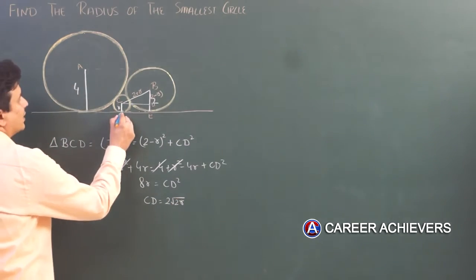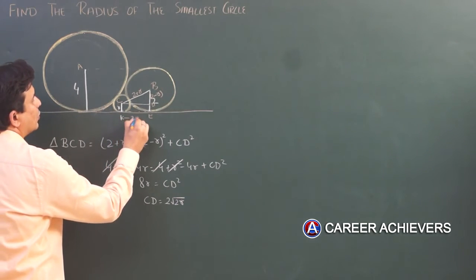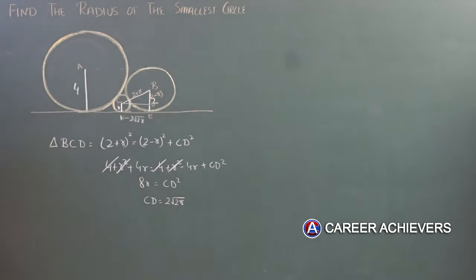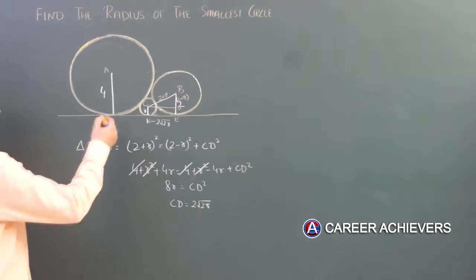CD is equals to 2√(2R). I got this CD as 2√(2R).